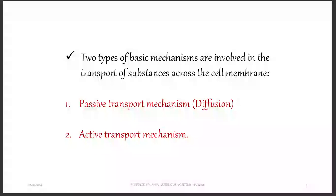We are looking at transport across the cell membrane, or cellular transport. There are two ways through which things are able to pass through the cell membrane. The first method is via passive transport, also known as diffusion. The second method through which things are able to cross from the outside of the cell to the inside, passing through the cell membrane, is through active transport.